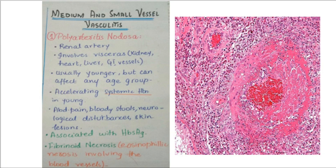This immune complex deposition leads to ulceration, infarct formation, ischemic atrophy, or hemorrhages in the affected vessels. The whole inflammatory process also weakens the arterial wall, which can lead to aneurysm and rupture. An aneurysm is the ballooning or dilatation of the blood vessel wall, which can rupture. This disease usually occurs in the 40 to 50 year age group, but it can occur in all age groups.